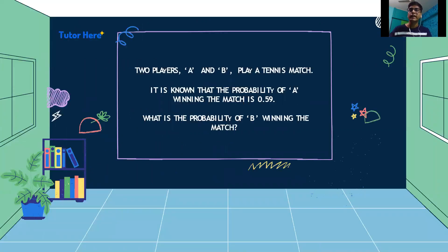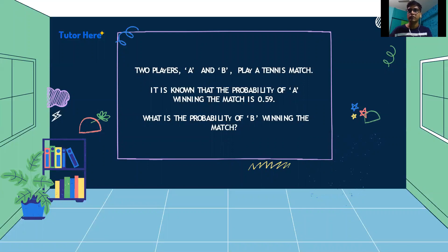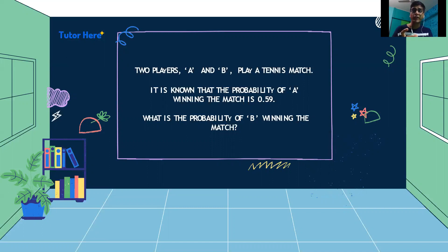Let's look at an example to explain the previous concept. Two players A and B play a tennis match. It is known that the probability of A winning the match is 0.59. What is the probability of B winning the match?